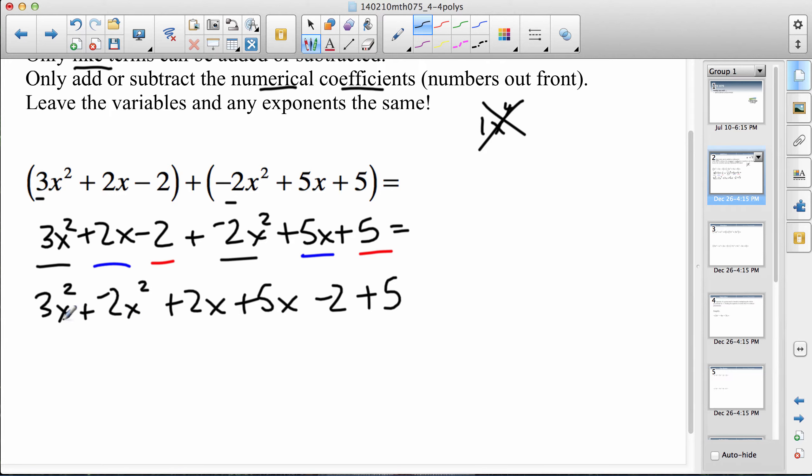Last thing would be to collect them. 3x squared minus 2x squared would be 1x squared, 2x plus 5x would be plus 7x, and negative 2 plus 5 would be a positive 3. So that would be adding two polynomials, two trinomials.